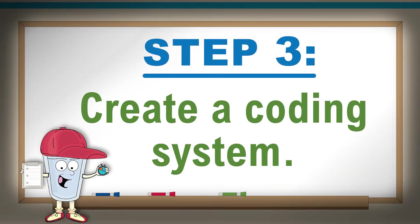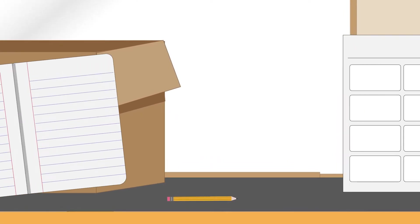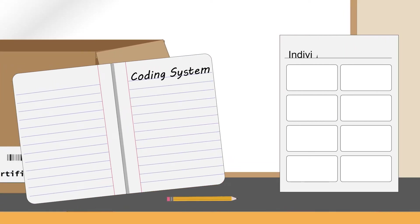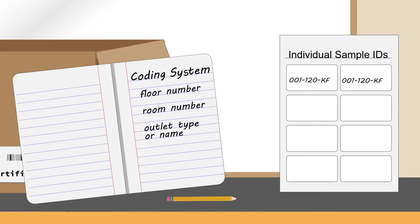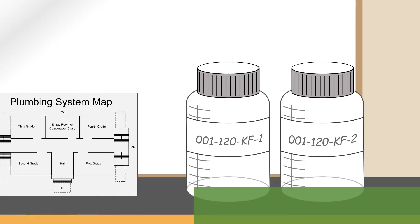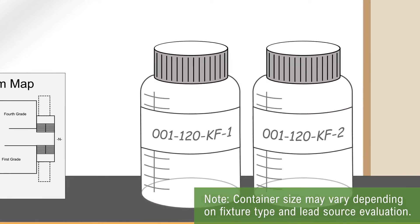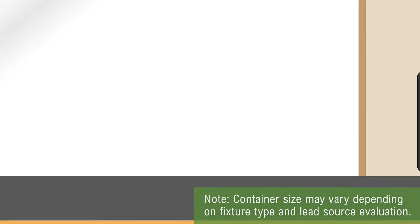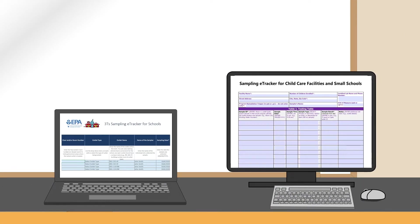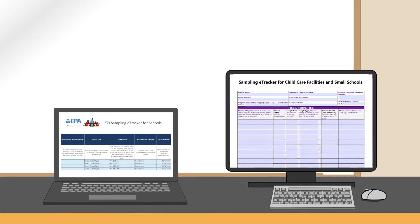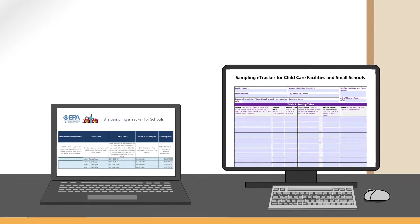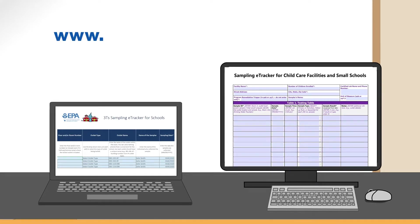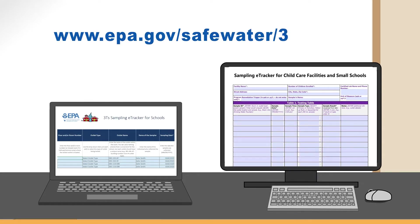Step 3: Create a coding system. To prepare for sample collection, develop an easy-to-read coding system to create individual sample IDs, which can include the floor number, room number, outlet type or name, and a sample number. This will allow you to easily identify your specific sampling location and properly label your sample bottles so that the lab knows the exact fixtures the samples were taken from, as well as the type of sampling conducted. The EPA 3Ts Data e-Trackers can assist with tracking and documenting sampling results and any actions you take if lead is detected, and can be accessed on the EPA 3Ts website.